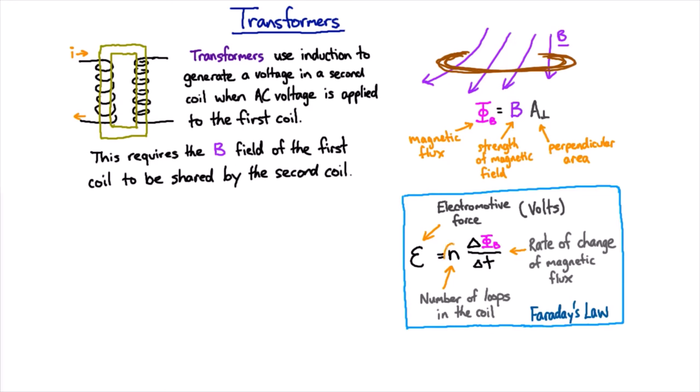And the answer lies in here in Faraday's law. The electromotive force, the voltage between those two wires, depends on the number of loops in the coil. And also when I make my solenoid, the strength of the magnetic field in this solenoid depends on the number of loops in the coil.